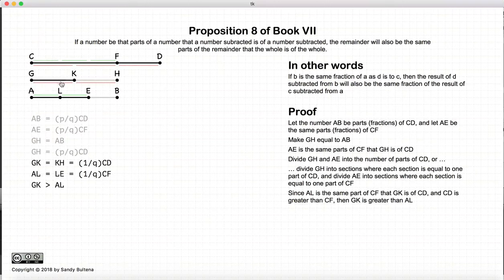Before we go further, I just need to prove that GK is greater than AL. Well, GK is the same fraction of CD as AL is of CF, so CD is larger than CF. Since it's the same fraction in both cases, GK is greater than AL.